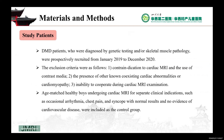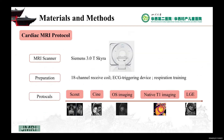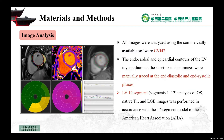This study prospectively recruited DMD patients and age-matched healthy boys undergoing cardiac MRI for separate clinical indications. The cardiac MRI examination was completed using a 3 Tesla system equipped with an 18-channel receiver coil. The cardiac MRI protocols included OS imaging, cine, native T1 mapping, and LGE sequence. The cardiac MRI data were analyzed by CVI42 software.